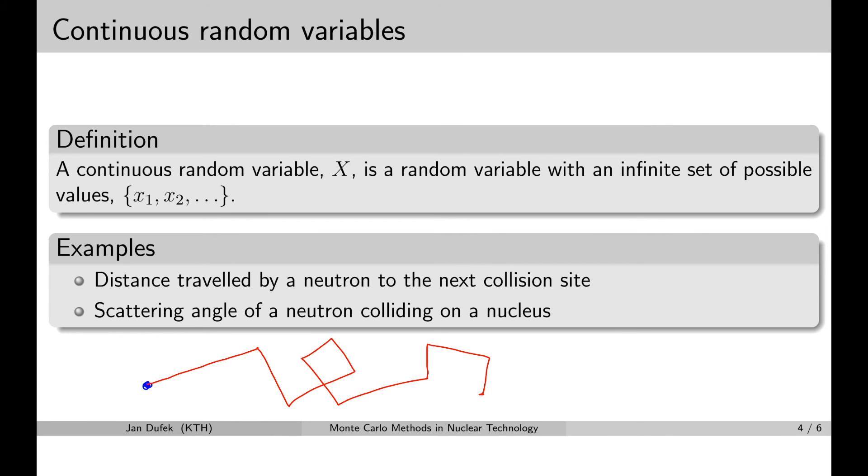Now, when you look at the distance that the neutron travels between the collision, that is a continuous random variable, because it cannot be predicted with certainty and there are infinitely many possible values. So, we know that it's a random number, which is positive and real. And of course, the number of real numbers within any interval is infinite. Therefore, the distance between collisions is a continuous random variable.